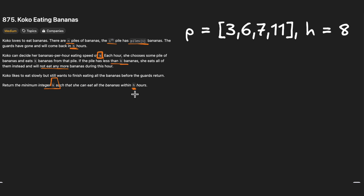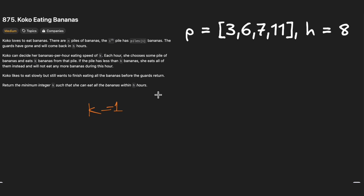By the way, Coco is a monkey. Let's jump to the problem and understand how we can solve it. We'll start with k equals one, meaning we eat one banana per hour. Here we have h equals eight, so we want to find the minimum k to eat all piles within eight hours. Starting with k equals one: to eat three bananas at speed one, we need three hours for the first pile.